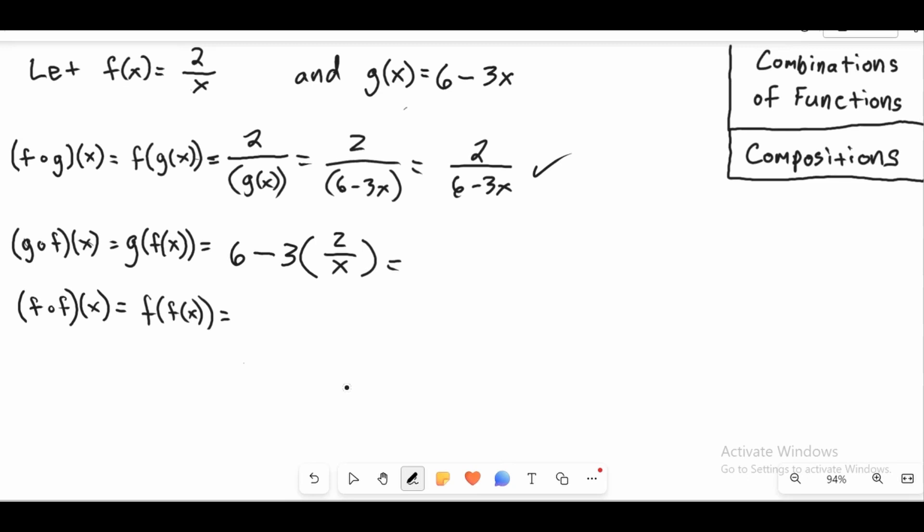Now this can be simplified. We've got 6 minus 3 times 2. The way this works is when you multiply something times a fraction, you're always multiplying by the numerator. So it's 3 times 2, which is 6 over x. Now we don't want to leave it like this. We want it to be one fraction.